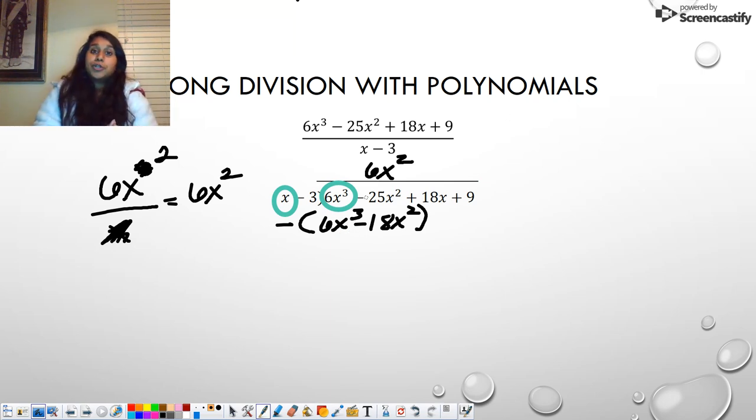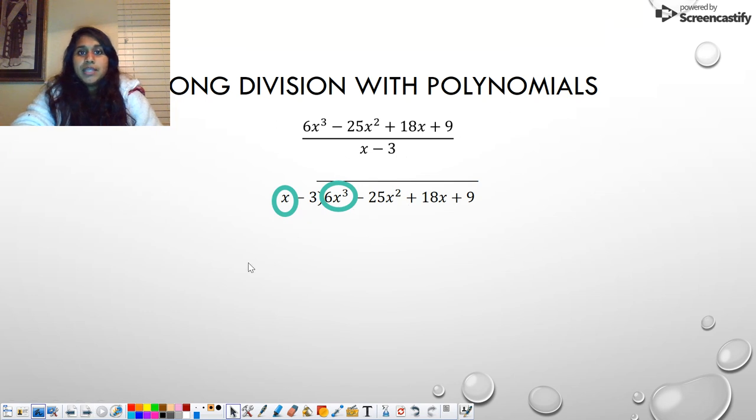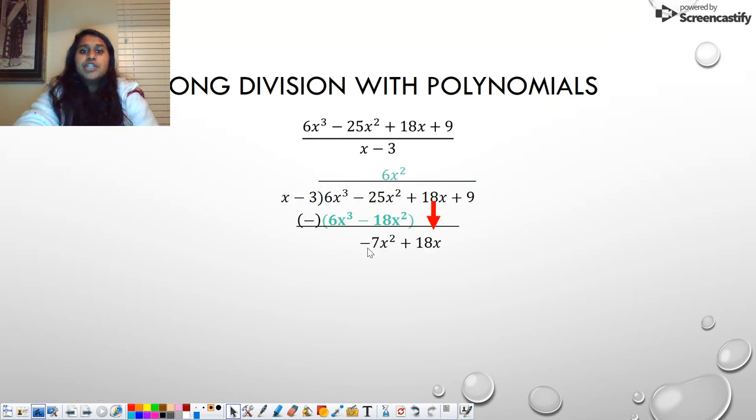But why did I put parentheses? Because it's not just one term anymore. We're going to have maybe multiple terms, usually two. So if you're going to do this, you have to make sure you put in those parentheses so you distribute that negative. You distribute that subtraction. And you don't drop your signs. So we distribute that negative. We're going to cancel out this term. This turns it into a positive 18x. So negative 25 plus positive 18 should net me a negative 7. So just like long division, I drag down the next one.